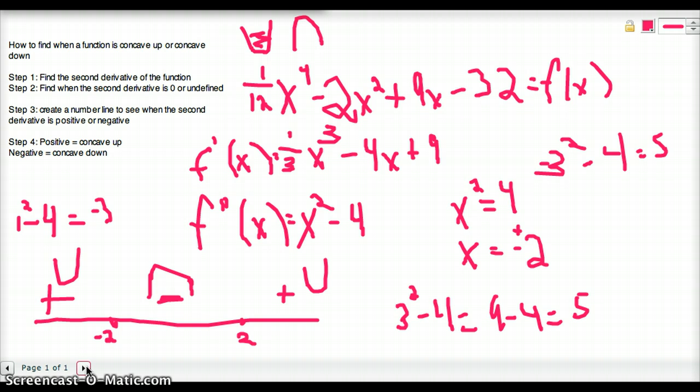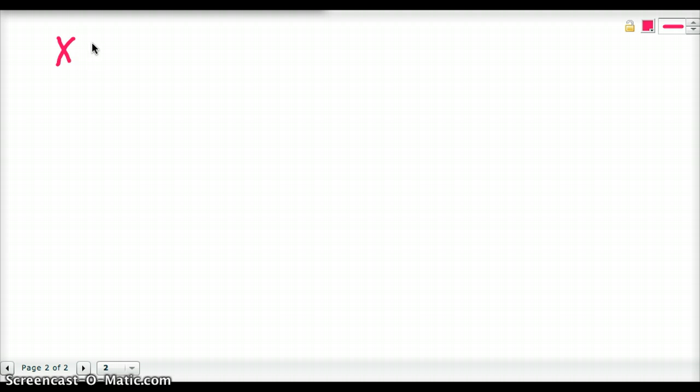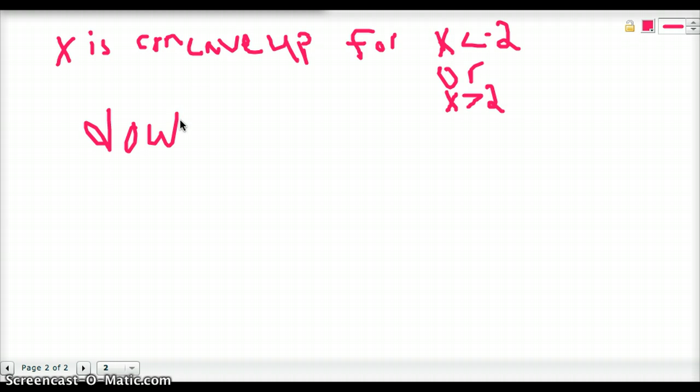So we can rewrite this on a cleaner page. As x is concave up for x is less than negative 2, or x is greater than 2. Make sure not to put the equal because it's 0 there. It's neither. It's an inflection point when it's 0. And it's concave down for negative 2 is less than x which is less than 2. There's your answer.